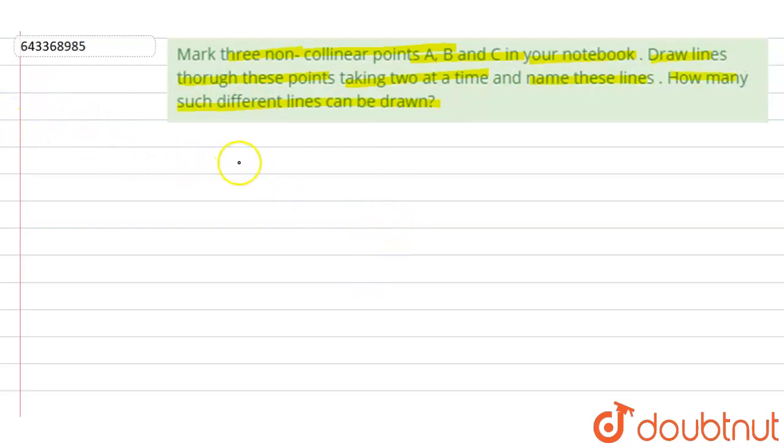So in this question, first we have to take three distinct points which are non-collinear. Let's take one point as A, one point as B, and one point as C.